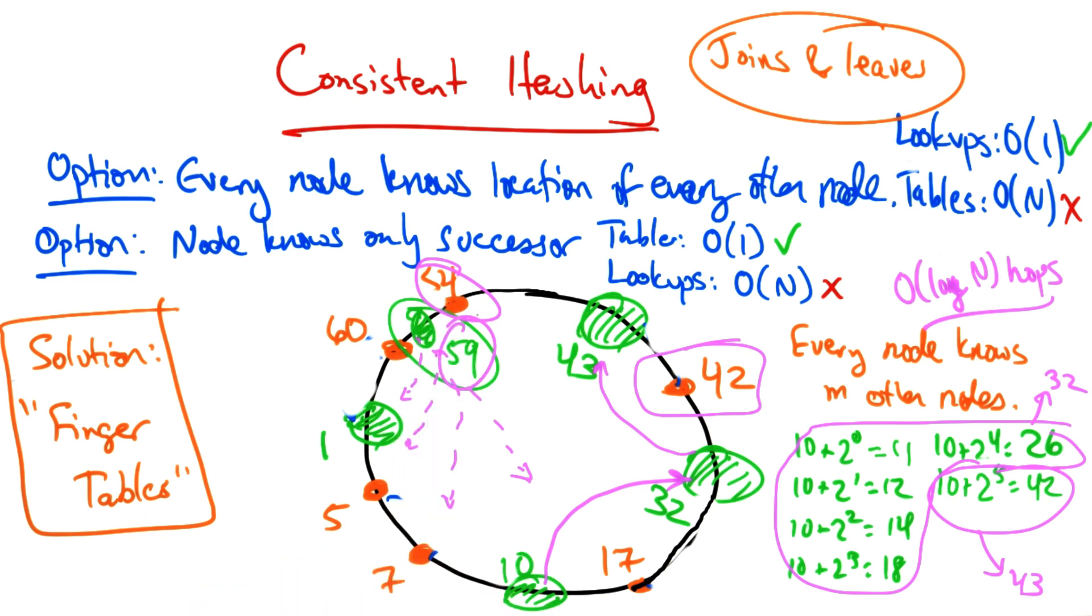In this case, the key that we must transfer from the successor, 1, is the data with ID of 54. In this case, each node's successor is maintained, and the successor of any particular ID K is always responsible for K.